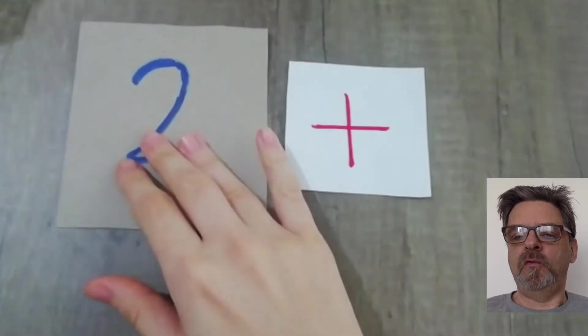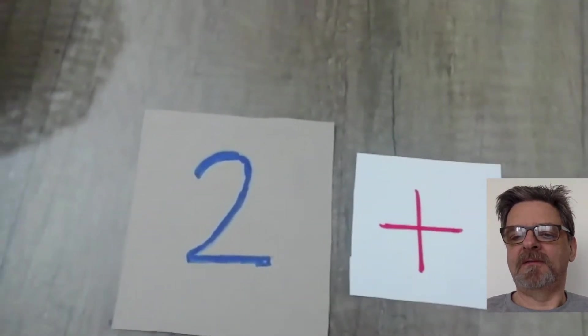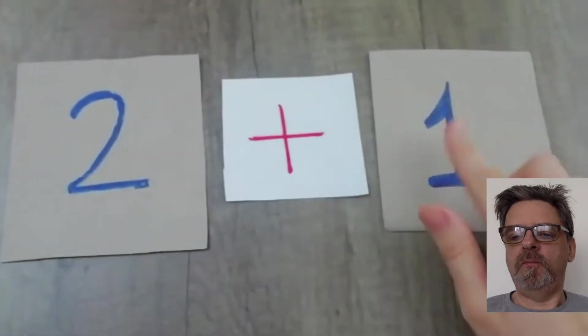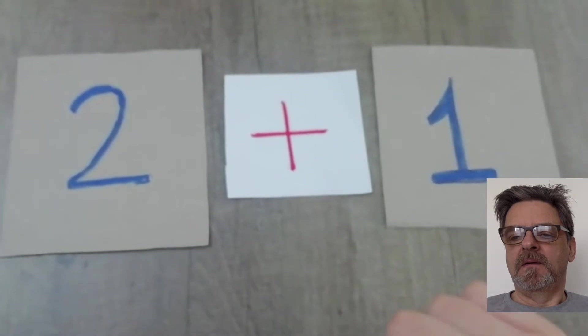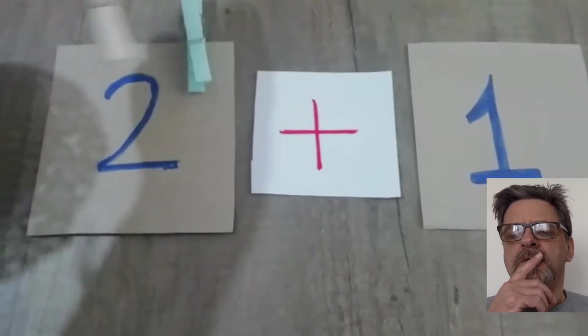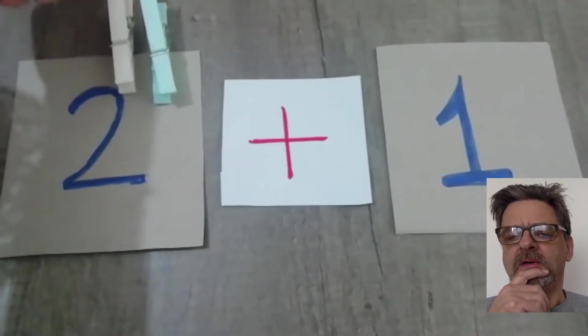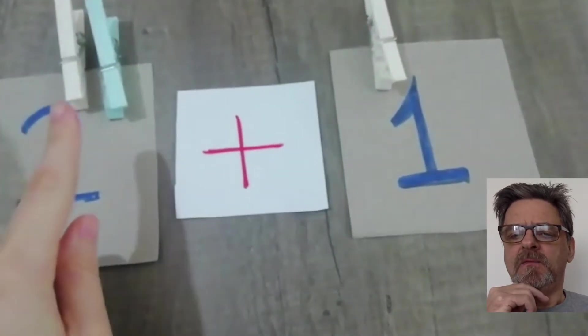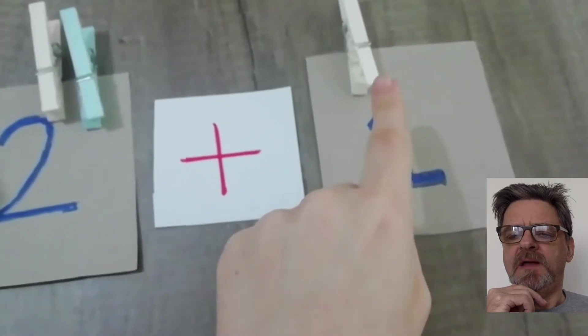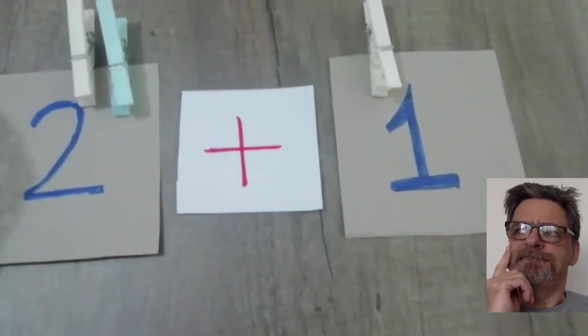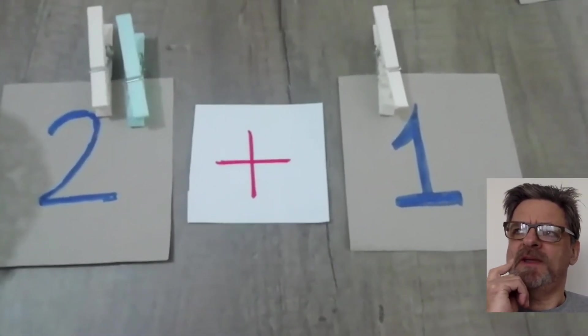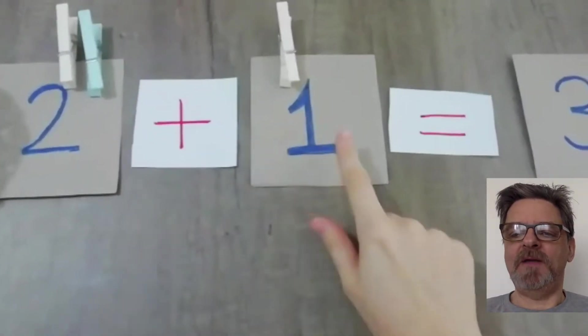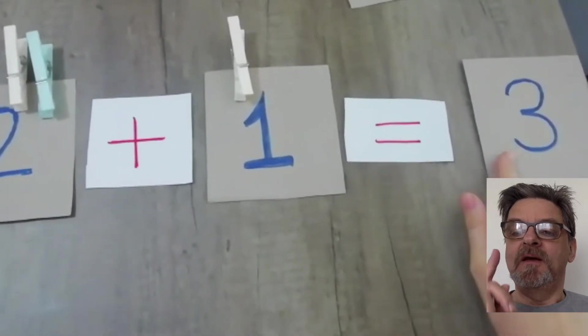2 plus 1. 2 plus 1. 2 pegs—1, 2—and 1 peg. 2 plus 1. What does 2 plus 1 equal? Yes, 3. 2 plus 1 equals 3.